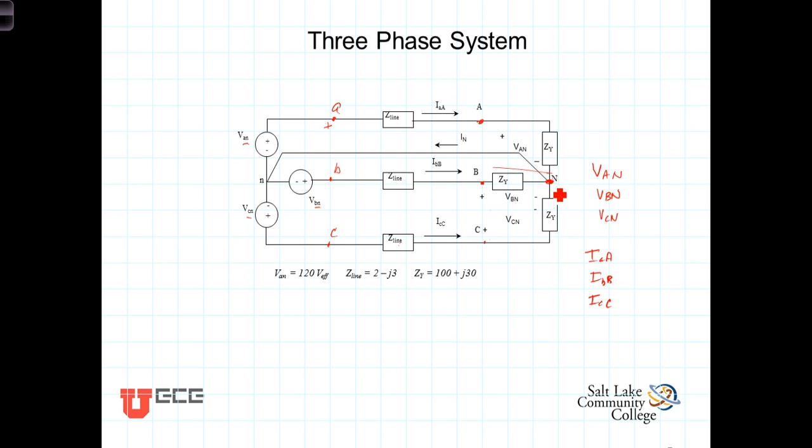The sum of those three then will equal the current flowing in this neutral that ties the left and right hand, or the source and the load neutrals, together. So we have I sub little a big A plus I sub little b big B plus I sub little c big C must equal I sub n. But once again, if it's a balanced system, these three represent a balanced set and they equal zero.